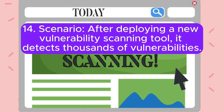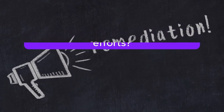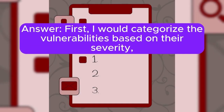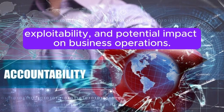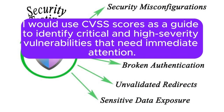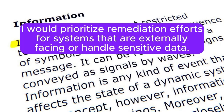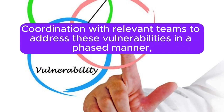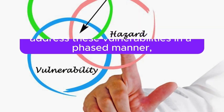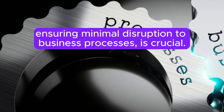Scenario 14: After deploying a new vulnerability scanning tool, it detects thousands of vulnerabilities. How do you prioritize remediation efforts? I would categorize the vulnerabilities based on their severity, exploitability, and potential impact on business operations. I would use CVSS scores as a guide to identify critical and high-severity vulnerabilities that need immediate attention, and prioritize remediation efforts for systems that are externally facing or handle sensitive data. Additionally, I would focus on vulnerabilities that have known exploits available in the wild, coordinating with relevant teams to address these vulnerabilities in a phased manner, ensuring minimal disruption to business processes.